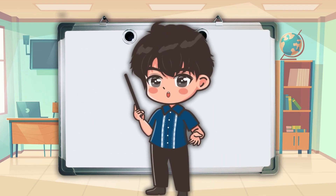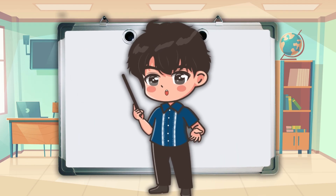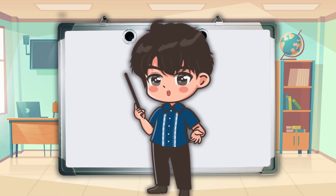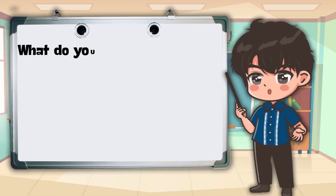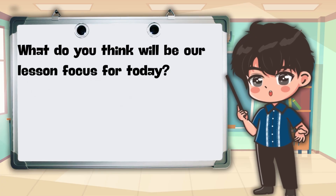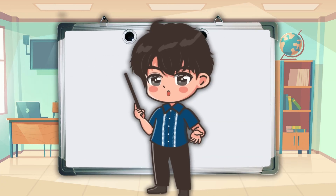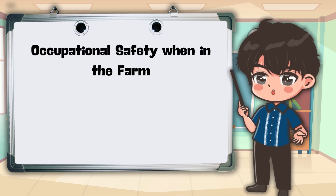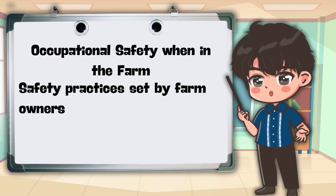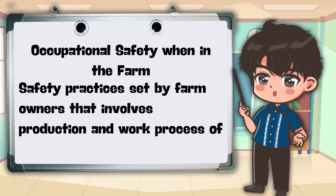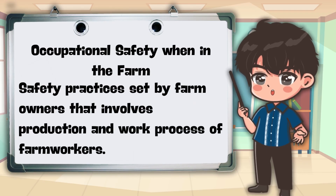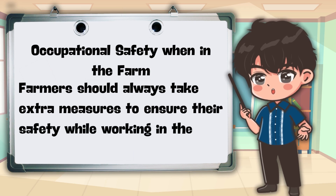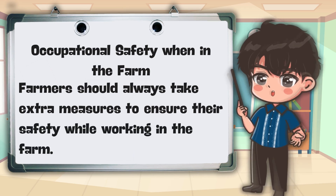On our yesterday's lesson, we studied about the different careers and job opportunities related to agriculture. Based on the photos that were presented, what do you think will be our lesson focus for today? Now, let's talk about Occupational Safety When in the Farm. It is a safety practices set by farm owners that involves production and work process of farmworkers. Farmers should always take extra measures to ensure their safety while working in the farm.